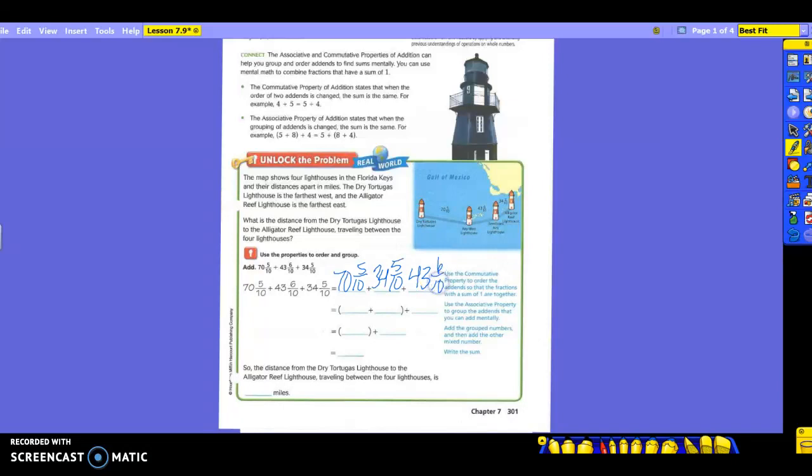We're going to write 70 and 5 tenths first because it's there and we can use it. We're going to skip over the 43 and 6 tenths and we're going to write 34 and 5 tenths next. Because we want to put our 5 tenths together so that we can add it up to get to 1. That means what do I have left? The 43 and 6 tenths. So basically all we're doing is writing them in a different order. Now as we go down, they're going to put these first two in parentheses because they want to do them first. So now we're going to do the 70 and 5 tenths plus the 34 and 5 tenths. You need to remember to always add your fraction first. So 5 tenths and 5 tenths gives you what? 10 tenths which makes a whole. So you've got a whole that you have to remember to add once I add the 70 and the 34. So what's 70 and 34? 104, but I have the 1 from the fraction, so I have a total of 105.